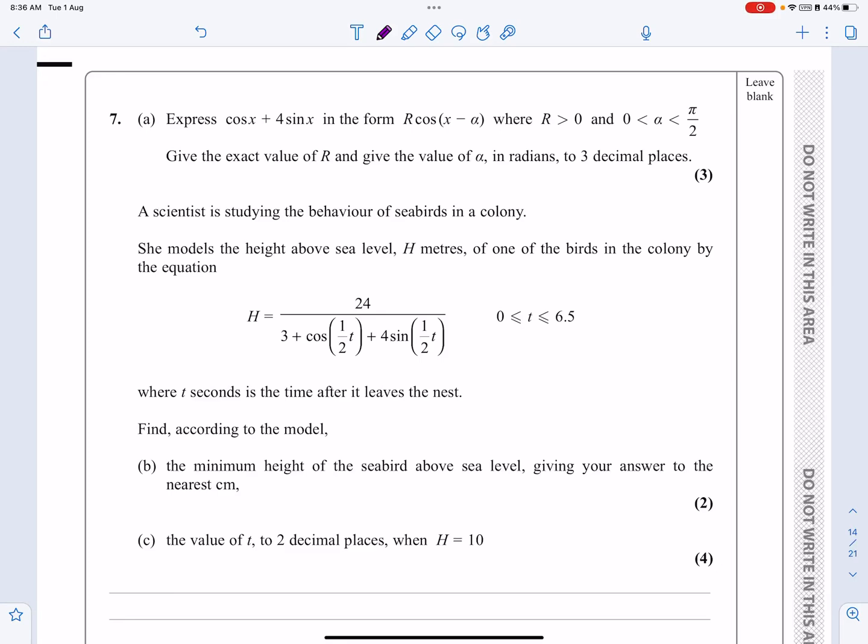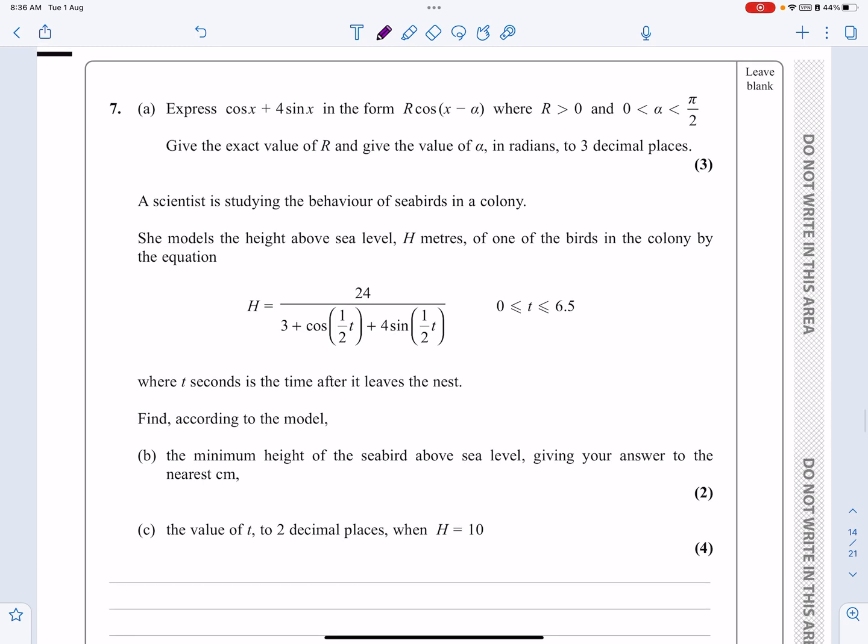Okay, this is the P3 paper from October 2020. It's question number 7. If we have a look at this question, we can see this is a trig addition formula question, and specifically where we're trying to simplify A cos x plus B sin x, in this case, into the format R cos x minus alpha.